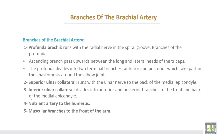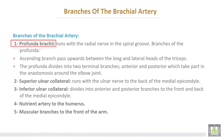Branches of the brachial artery. Number 1: profunda brachii artery, which runs with the radial nerve in the spiral groove on the posterior surface of the humerus. Branches of the profunda: first, an ascending branch that passes upward between the long and lateral heads of the triceps. The profunda then divides into two terminal branches — anterior and posterior — which take part in the anastomosis around the elbow joint.